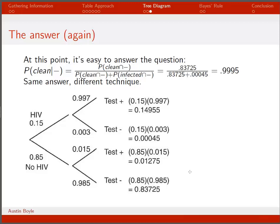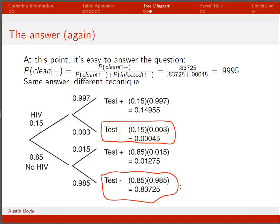It's easy to answer the question: what's the probability of being clean given a negative test result? People with negative test results appear on two branches — clean-and-negative (0.83725) and infected-and-negative. Of those, only the clean group is truly free of HIV. So we divide the clean-and-negative probability by the total probability of a negative test, giving us 0.9995 — the same answer as before.